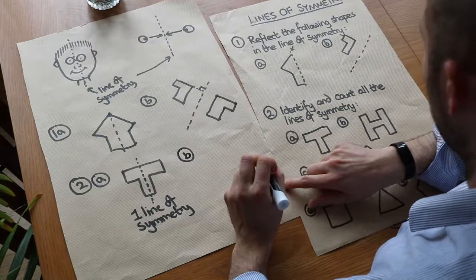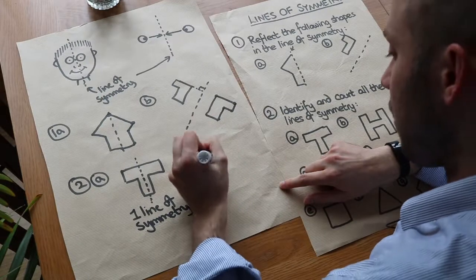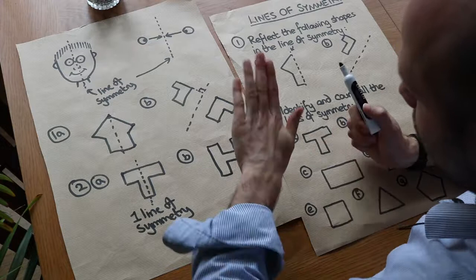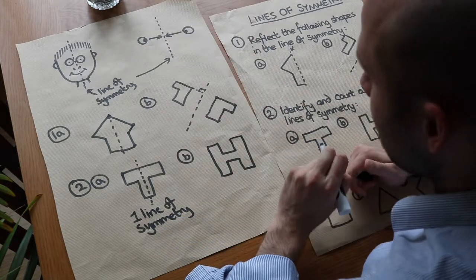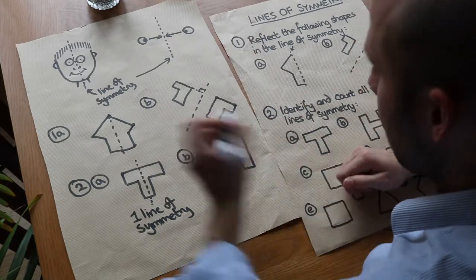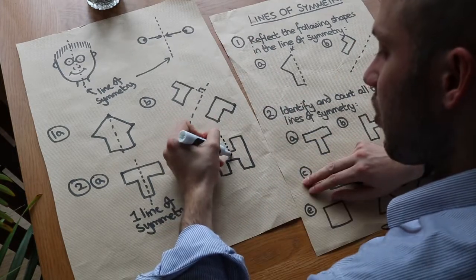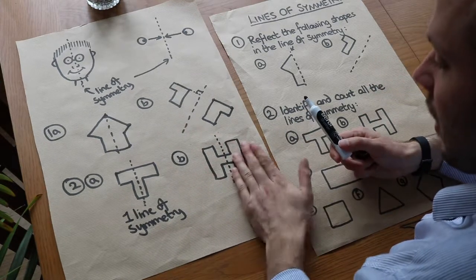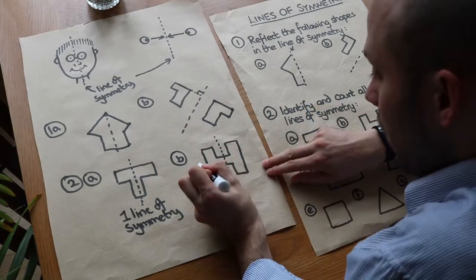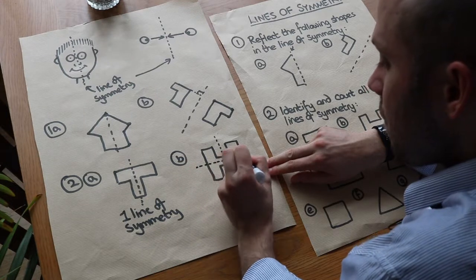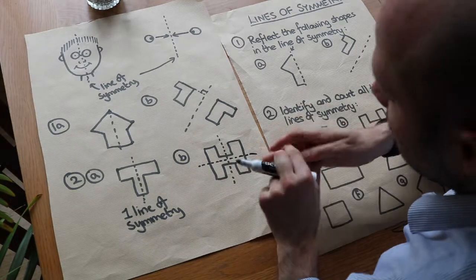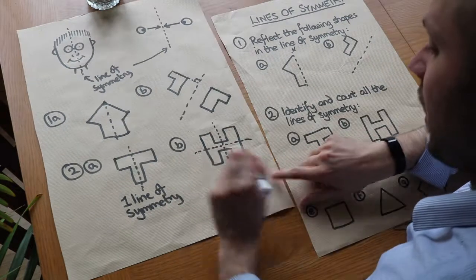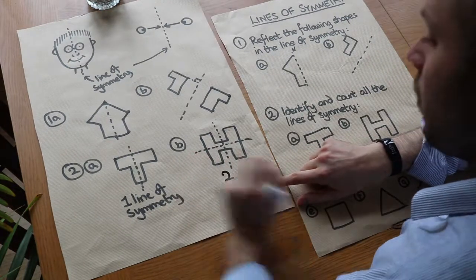For shape B, we've got an H shape. Where can we put a mirror so we see the same thing on either side? You can spot this horizontal line of symmetry — flip this side and you get that side. But also if I have a vertical line here, flipping this side gives that side. So the H has two lines of symmetry.